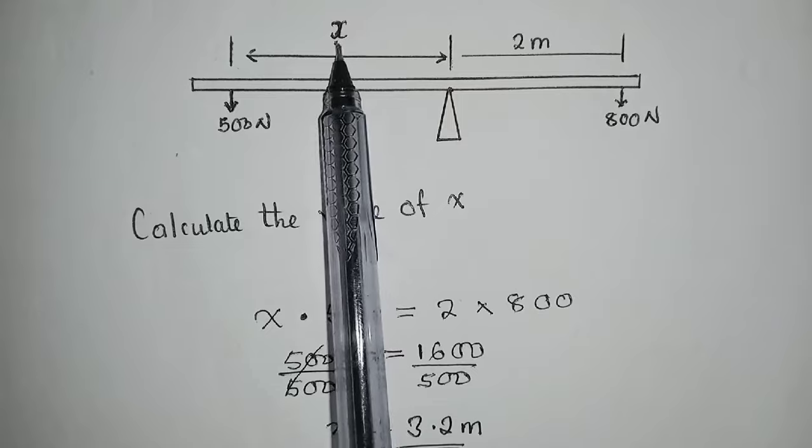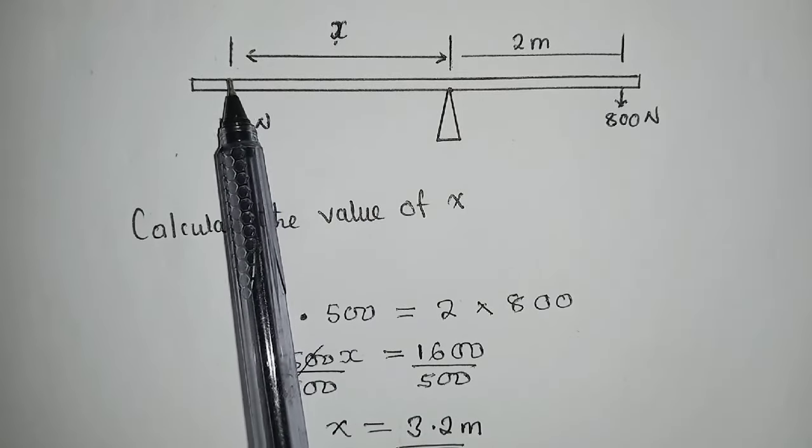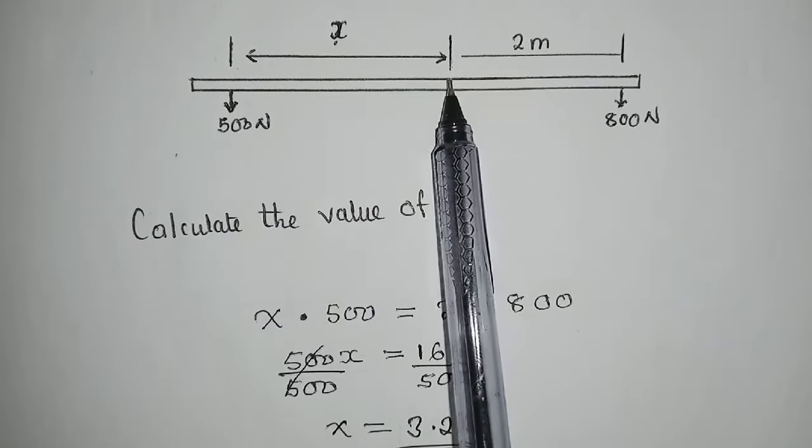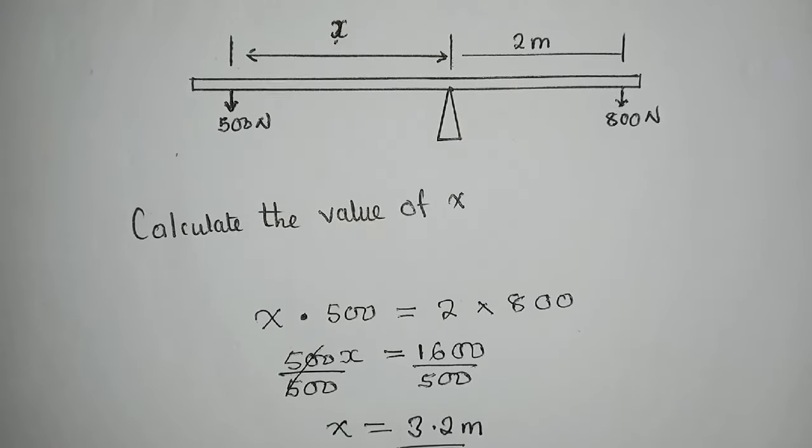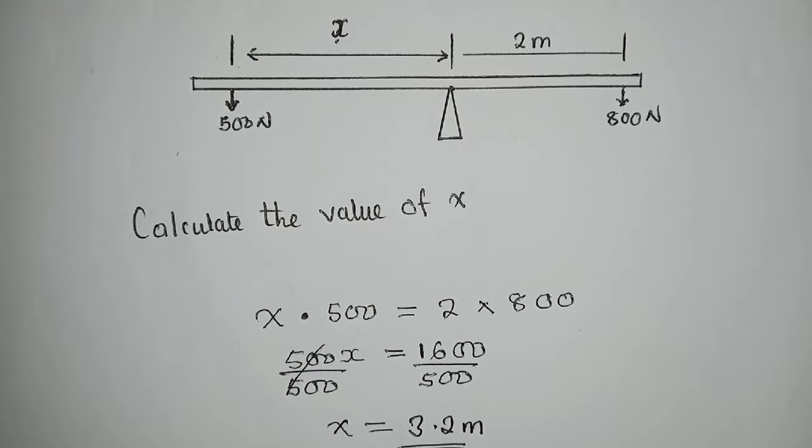And x is the distance from where the load is to the pivot. So that's how you will find the value of x.